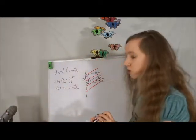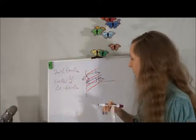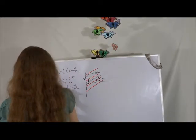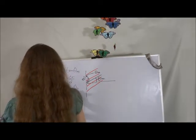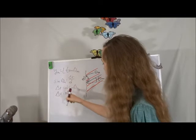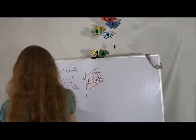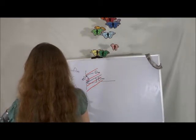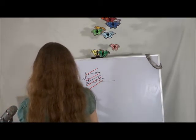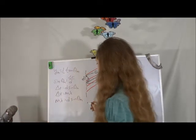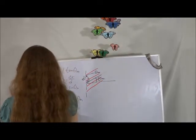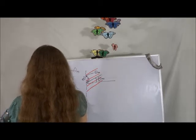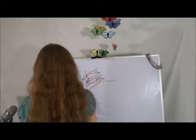Recall from last time that we get constructive interference when delta r equals m lambda. So we set the two expressions equal: m lambda equals d sine theta_m. Or, solving for sine theta_m, we get sine theta_m equals m lambda over d, which should also look familiar.